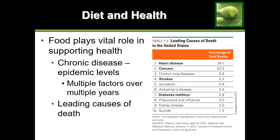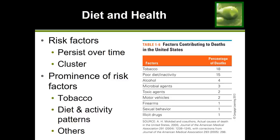One of the ways to understand how important nutrition is when it comes to our health is to look at how it influences the causes of death. In this table, you have the top 10 causes of death in the U.S., and the ones in bold are the ones that are related to nutrition. The top leading cause of death is heart disease. A good diet can decrease your risk, while a bad diet can increase your chances of developing heart disease and eventually passing from that disease.